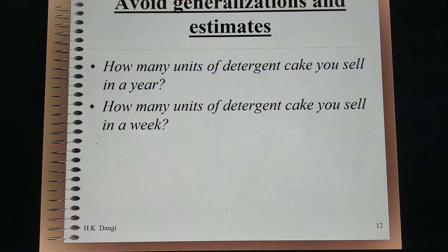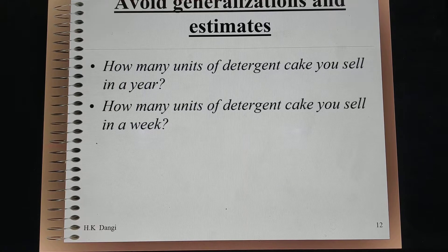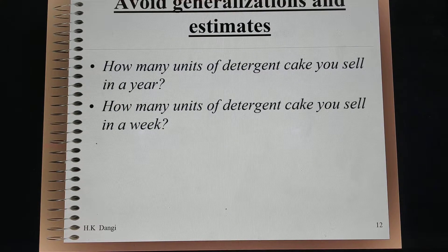We should also avoid generalization and estimation. For example, 'How many units of detergent cake do you sell in a year?' would be very difficult to recall accurately. Instead, ask for a smaller interval: 'How many units of detergent cake do you sell in a week?' and multiply that number by 52 to get an estimate of annual sales.